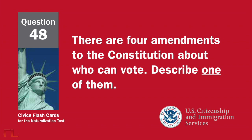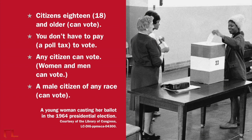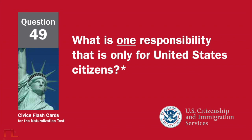There are four amendments to the Constitution about who can vote. Describe one of them. Citizens 18 and older can vote. You don't have to pay a poll tax to vote. Any citizen can vote. Women and men can vote. A male citizen of any race can vote.